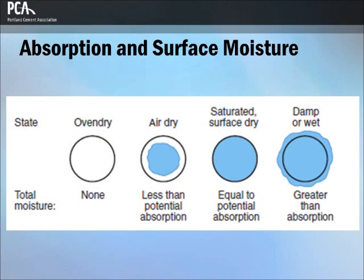The internal structure of an aggregate particle is made up of solid matter and voids that may or may not contain water. The moisture conditions of aggregates are shown here. They are designated as oven dry, at zero moisture content, and fully absorbent; or air dry, dry at the particle surface but containing some interior moisture, less than potential absorption.